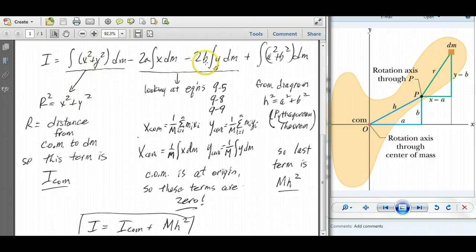These next two terms, if you compare them to equations that we saw in chapter 9, this is the term for the x-coordinate of the center of mass, and this is the term for the y-coordinate of the center of mass. So since my center of mass in this diagram is at the origin, these terms must be zero, because x dm is zero and y dm is zero, and that's what I've got up here. So those terms drop out.